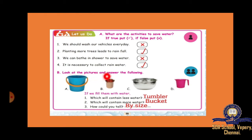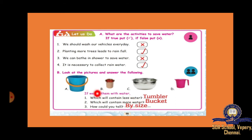Look at the pictures and answer the following. The pictures show a bucket, tumbler, bowl, and mug. If we fill them with water, which will contain less water? The tumbler will contain less water. Which will contain more water? Obviously, the bucket. We can tell by the size — because the bucket's size is big, it contains more water, and the tumbler contains less water.